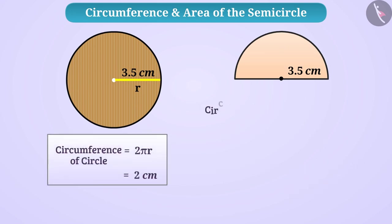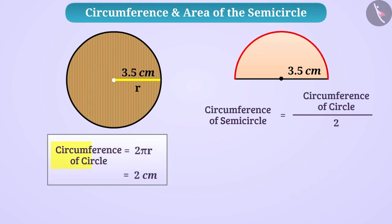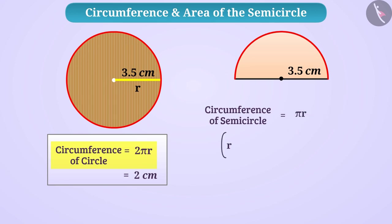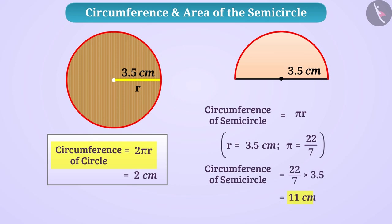Similarly, the circumference of the semicircle is half the circumference of the circle, so the circumference of the semicircle will be πR. By taking R = 3.5 cm and pi = 22/7, we get the circumference of this semicircle as 11 cm.